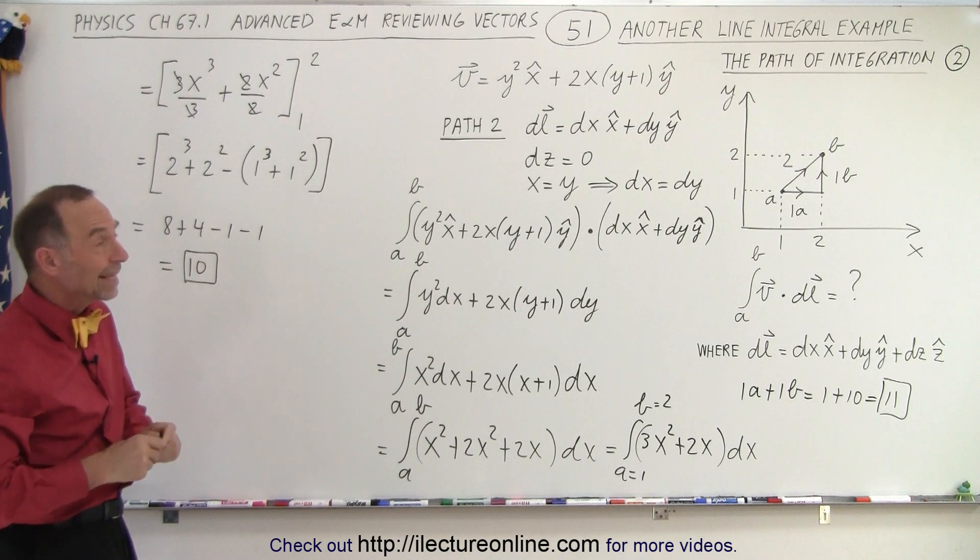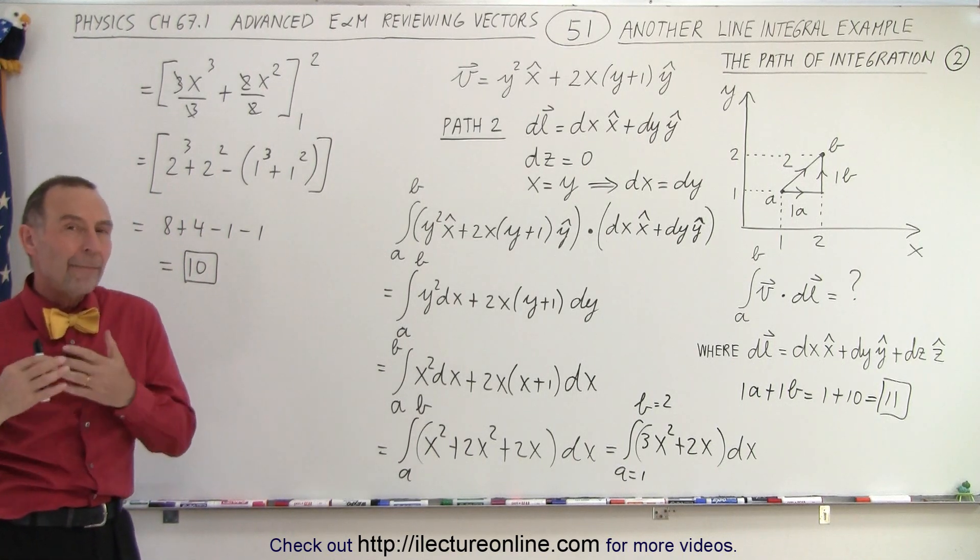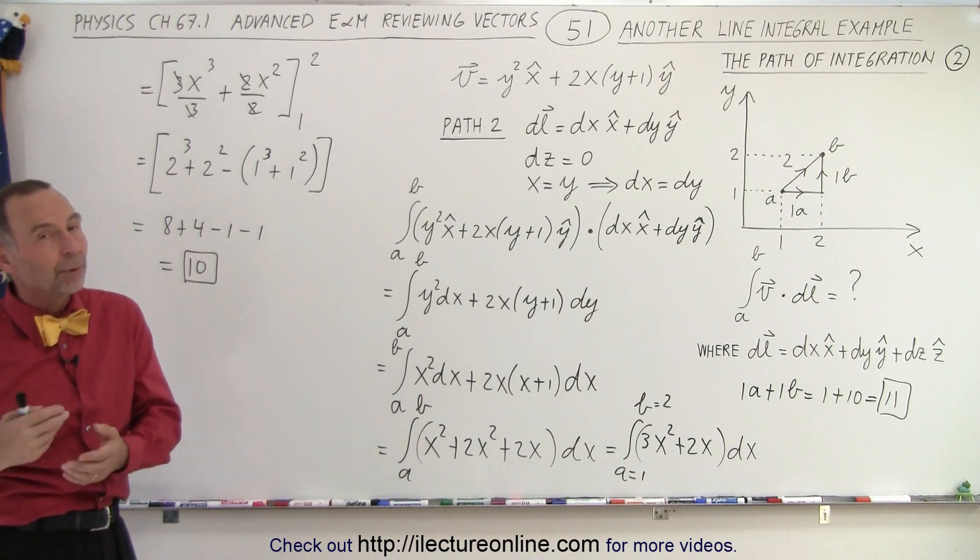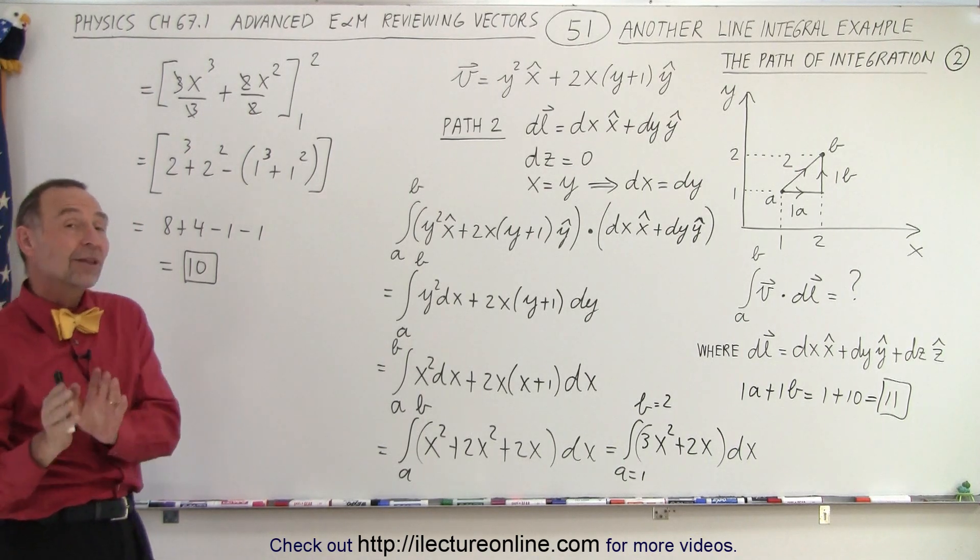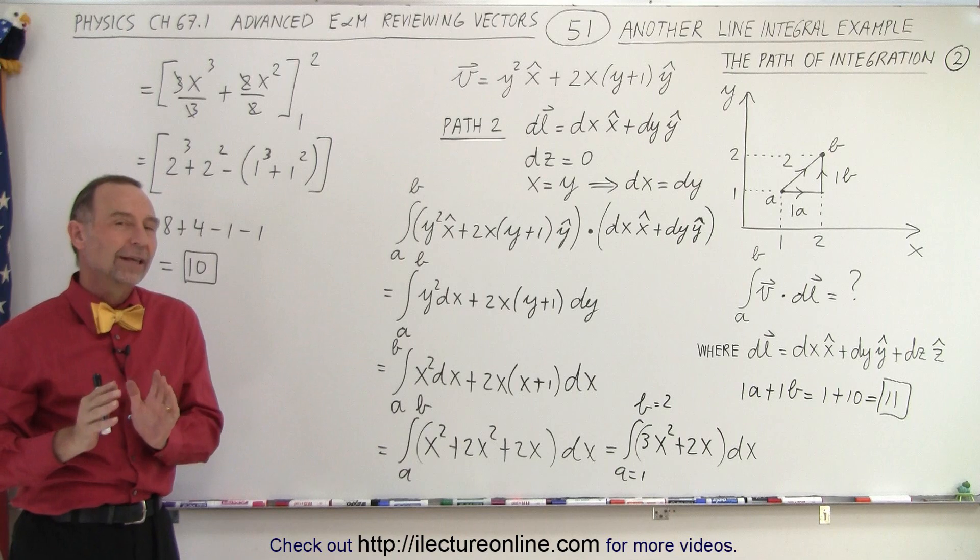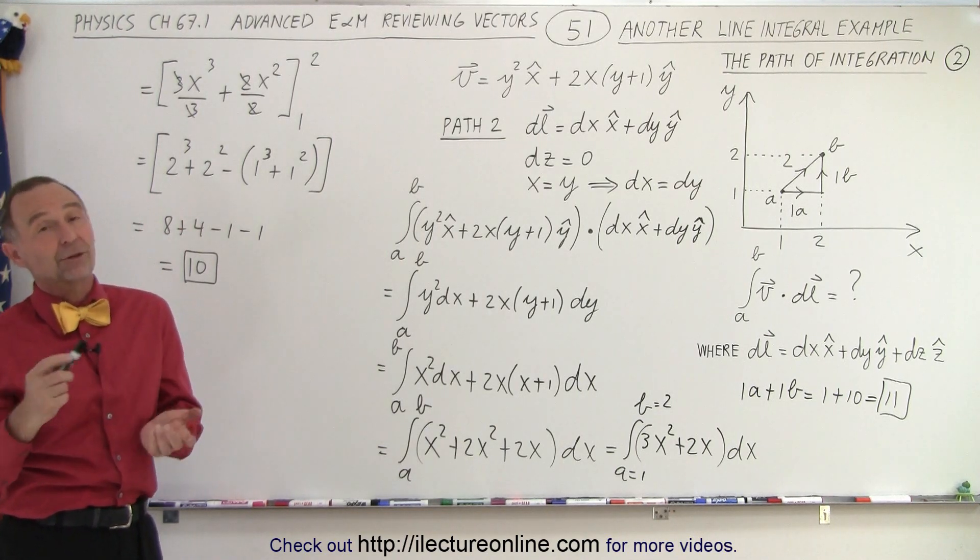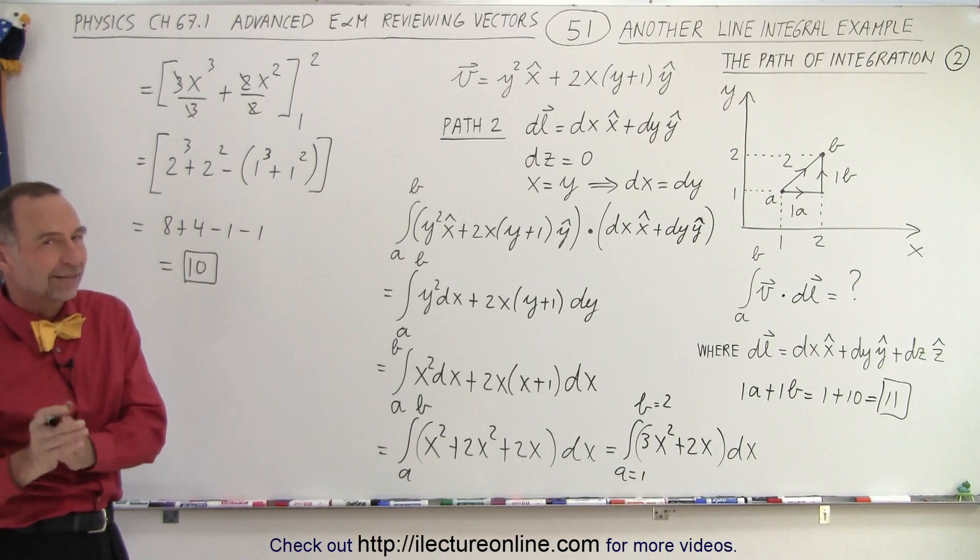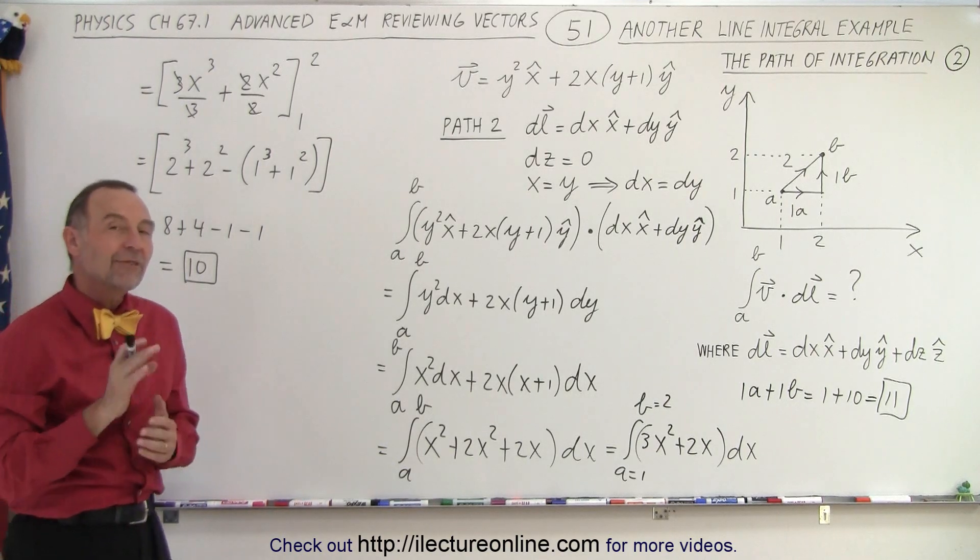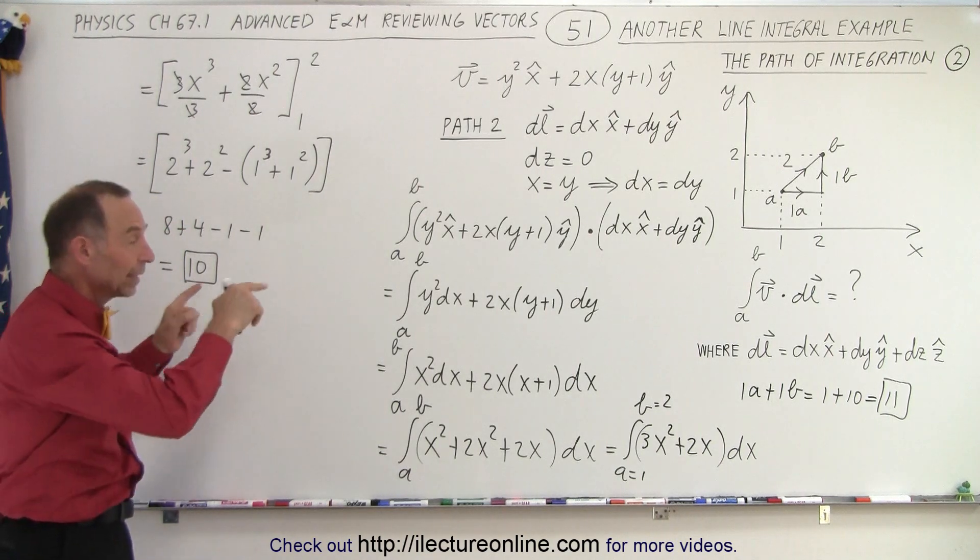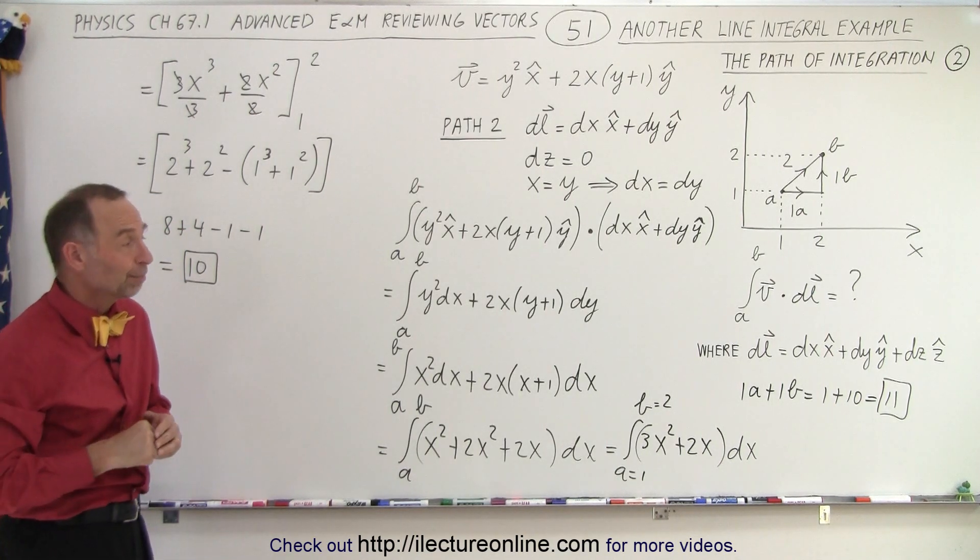Well, that tells us that the line integral is path dependent. If you take a different path, you probably will get a different value. Now, I would say probably, not always. If the vector field is conservative, then it's path independent. If you take any path from A to B, you always get the same result. But if the vector field is not conservative, then if you take different paths, you will get different results, like in this particular example.